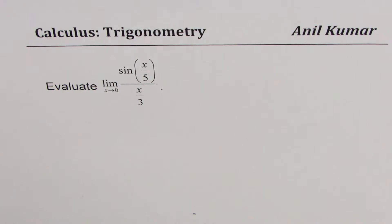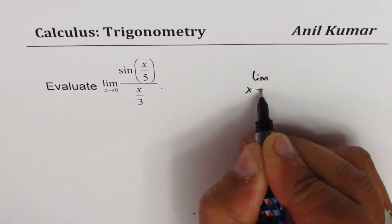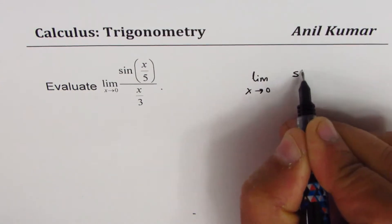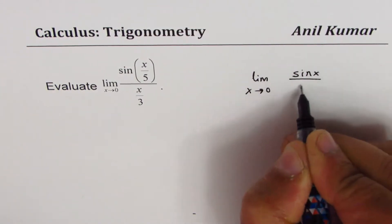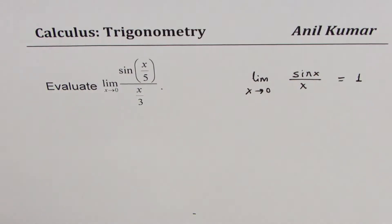You can always pause the video, answer the question, and look into my suggestions. The formula which we are going to use is: limit as x approaches 0 of sin(x)/x equals 1. This is known to us, right?